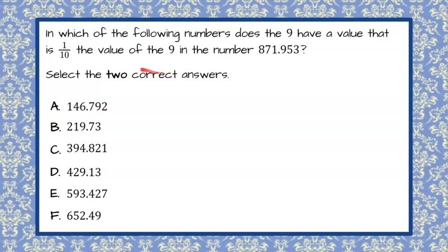Here's our question. In which of the following numbers does the 9 have a value that is one-tenth the value of the 9 in the number 871 and 953 thousandths?